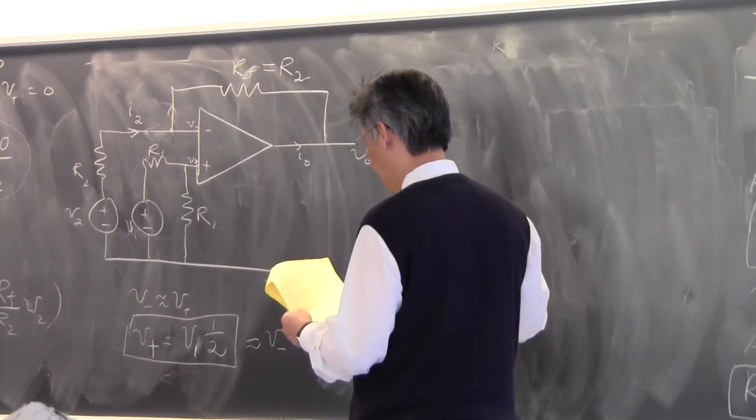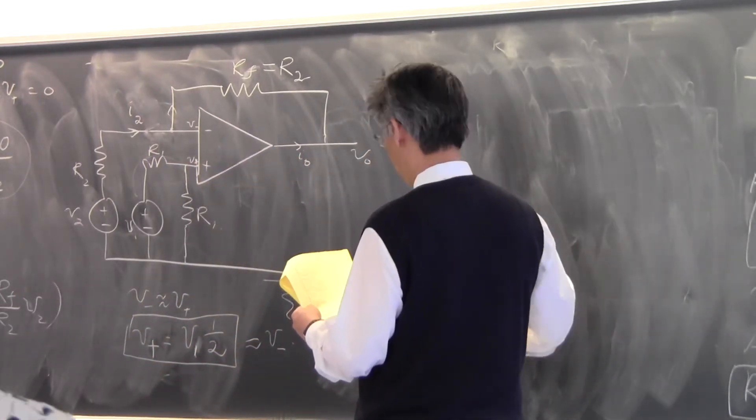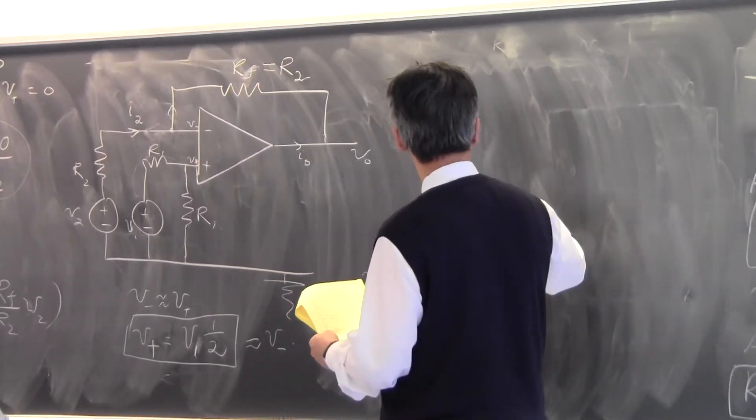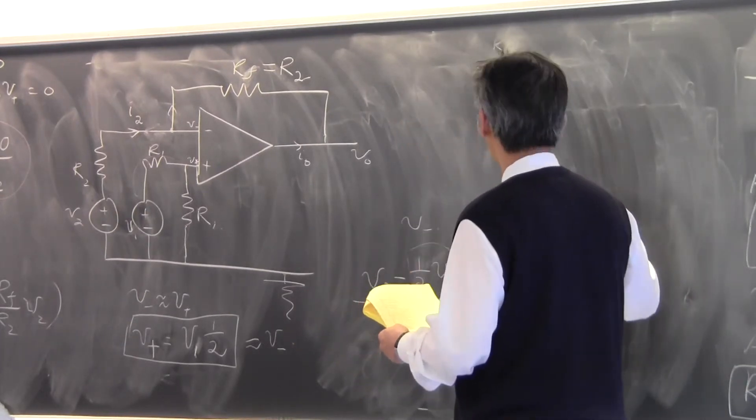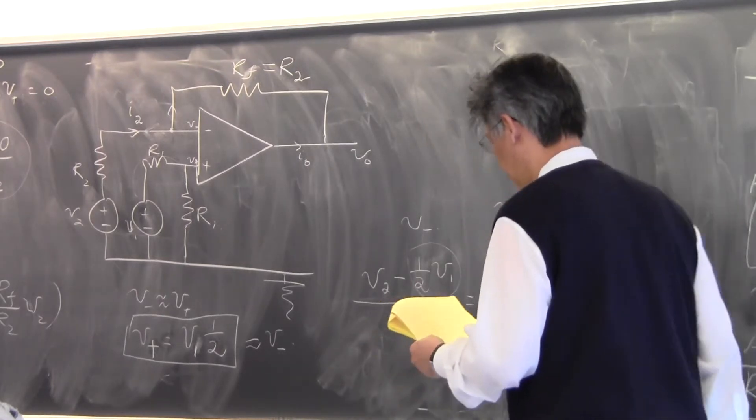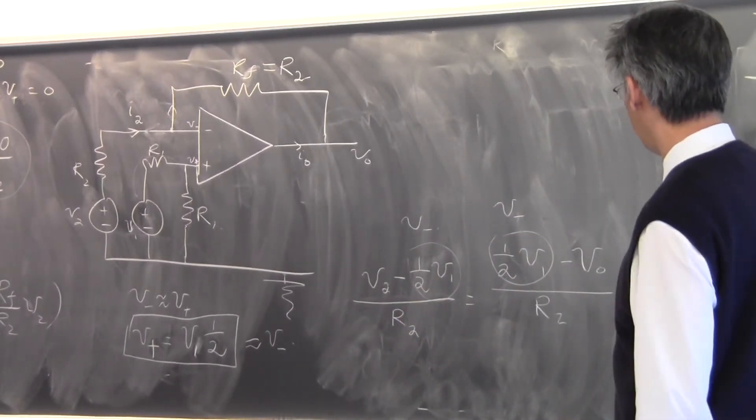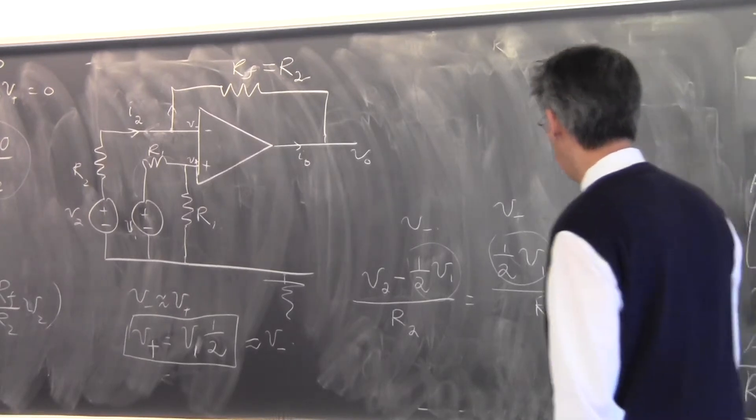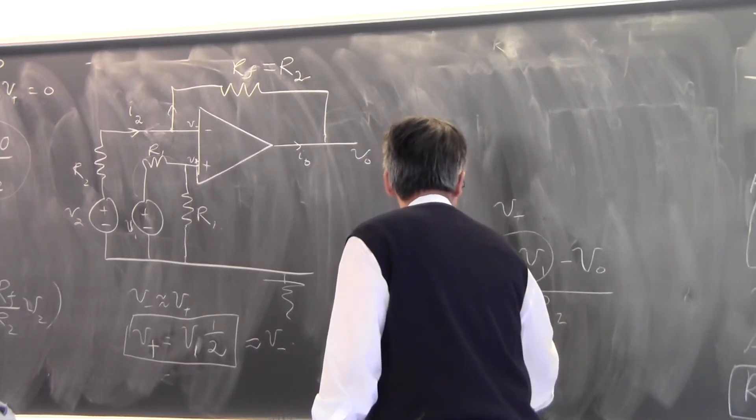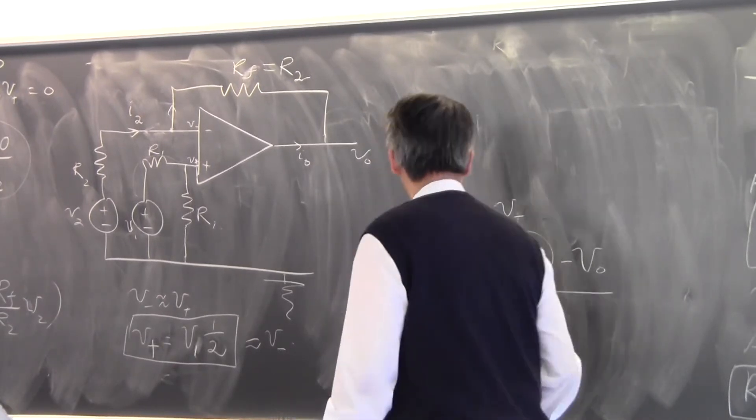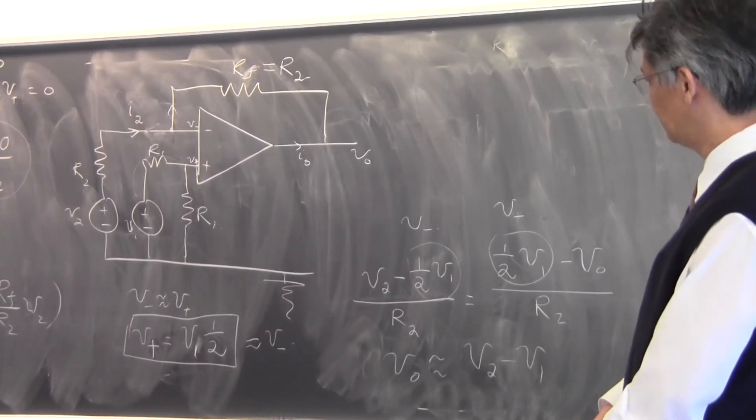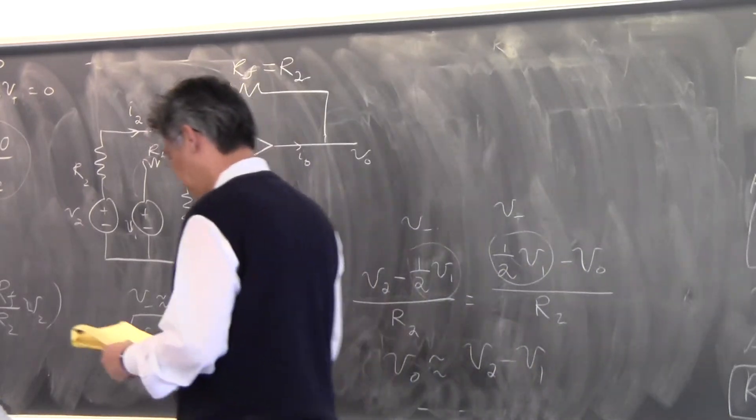This is just V-. And then that must be equal to the current flowing over there. Must be equal to half V1, this is V- again, minus V_out divided by R2. And you can see that R2 cancels each other. V_out is equal to V2 minus V1. So this is the voltage difference. It takes a difference of two voltages.